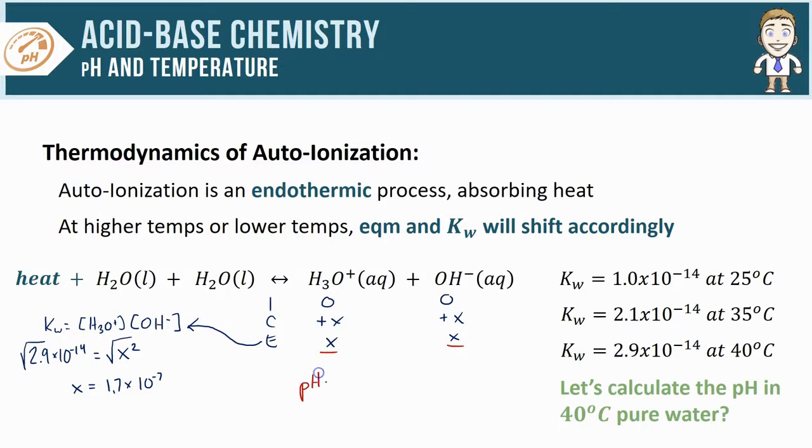If I'm trying to calculate the pH, then I need to take the negative log of the H3O+. So negative log of 1.7 × 10^-7 gives me a final answer of 6.77 for the pH.